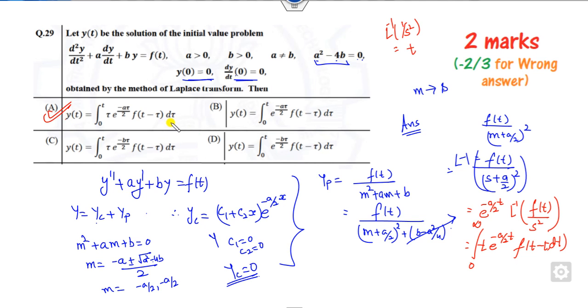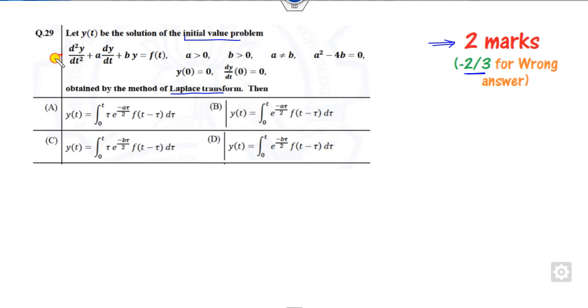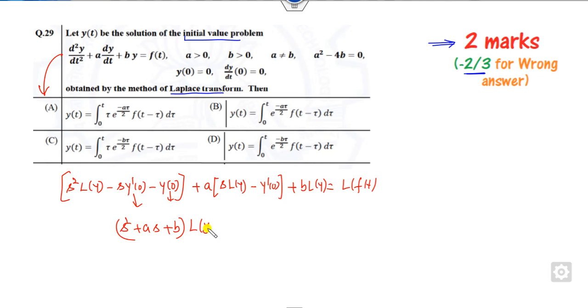Otherwise if you want to solve this with the help of the Laplace transformation, again we will get the same answer. If you use the Laplace transformation here it will be s squared Laplace of y minus s y(0) minus y'(0), plus a times s Laplace of y minus y(0), plus b Laplace of y equals Laplace of f(t). Since the initial values are 0, this becomes s squared plus a s plus b times Laplace of y equals 1 upon s squared.